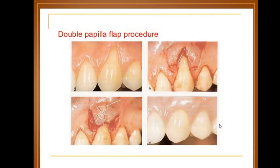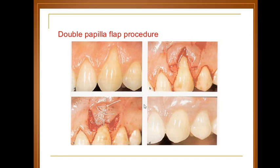The second type is the double papilla flap. Here you can see the recession, and this is the flap. We make stitches and cover all the recession with the double papilla flap procedure. After a few weeks, you can see the difference — there is a big improvement in the gingival coverage.